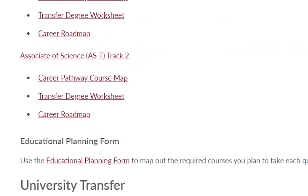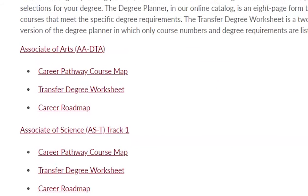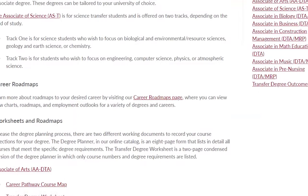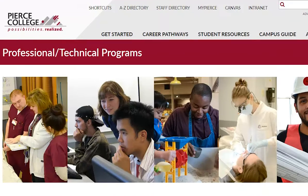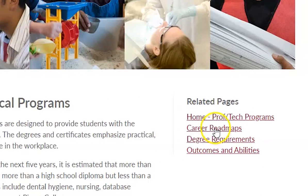So that's the main definition and description of what a transfer degree is. Now let's go back up and look at the Professional Technical Degrees, listed here as Career Roadmaps. We're going to click on that to see the list of Professional Technical Degrees that we offer, otherwise known as Associate of Applied Science.